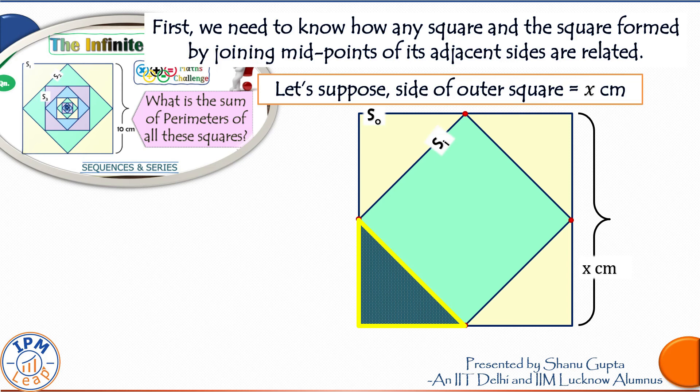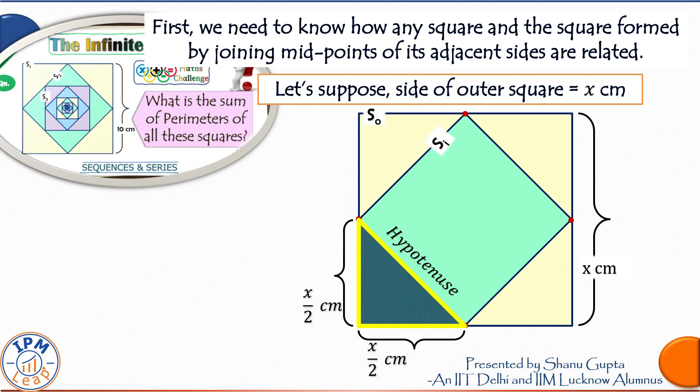Now let us focus on this triangle. It's a right angle triangle. And we can see that the hypotenuse of this triangle is equal to the side of the inner square, which we need for our calculations. Since these two points are midpoints of the sides, this length is equal to half of the length of this side, that is x by 2. And so with this length, it is x by 2.